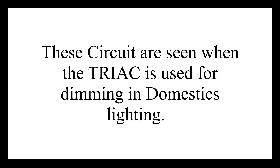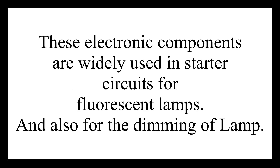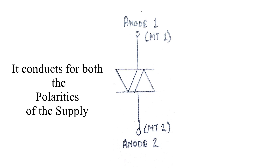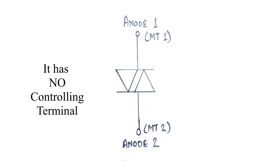As a result, DIACs are often found in light dimmers such as those used in domestic lighting. These electronic components are also widely used in starter circuits for fluorescent lamps. The symbol of the DIAC has two arrows in both directions, which means that it conducts for either polarity of supply voltage. A DIAC does not have a controlling terminal such as a gate, unlike thyristor devices.